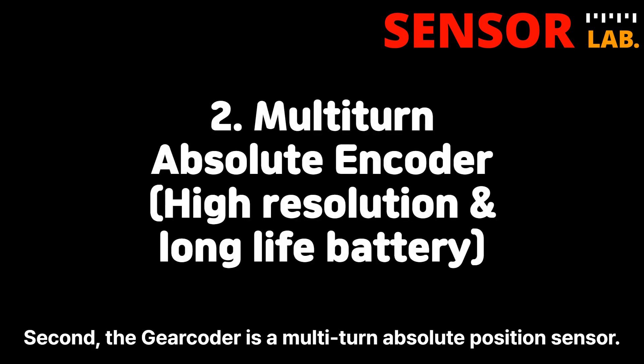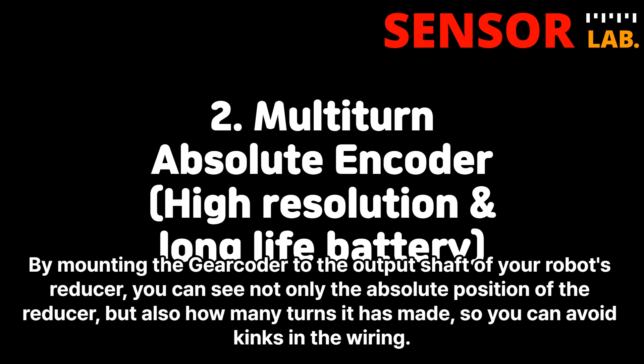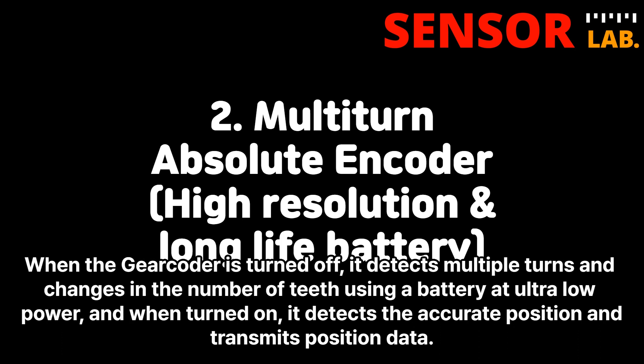Second, the gearcoder is a multi-turn absolute position sensor. By mounting the gearcoder to the output shaft of your robot's reducer, you can see not only the absolute position of the reducer, but also how many turns it has made, so you can avoid kinks in the wiring. When the gearcoder is turned off, it detects multiple turns and changes in the number of teeth using a battery at ultra-low power, and when turned on, it detects the accurate position and transmits position data.